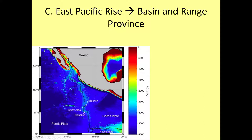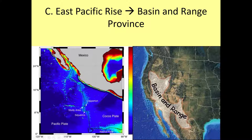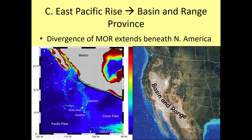What they were alluding to at the end of that video is that this extension and stretching of the crust continues up through North America. It creates what's called the Basin and Range Physiographic Province, which is outlined here on this map. All of this stretching of the crust is just an extension of these mid-ocean ridge systems where you have divergence also going on beneath North America — divergence of the mid-ocean ridge in the East Pacific Rise creates extensional stress beneath North America.